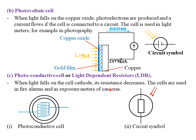LDRs are used in fire alarms and exposure meters of cameras. In a fire alarm, when fire breaks out, light from the fire causes electron emission from the photo conductive cell cathode. More electrons complete the circuit, switching on the fire alarm so it rings and alerts people in the area to take necessary action. This is the photo conductive cell and its circuit.